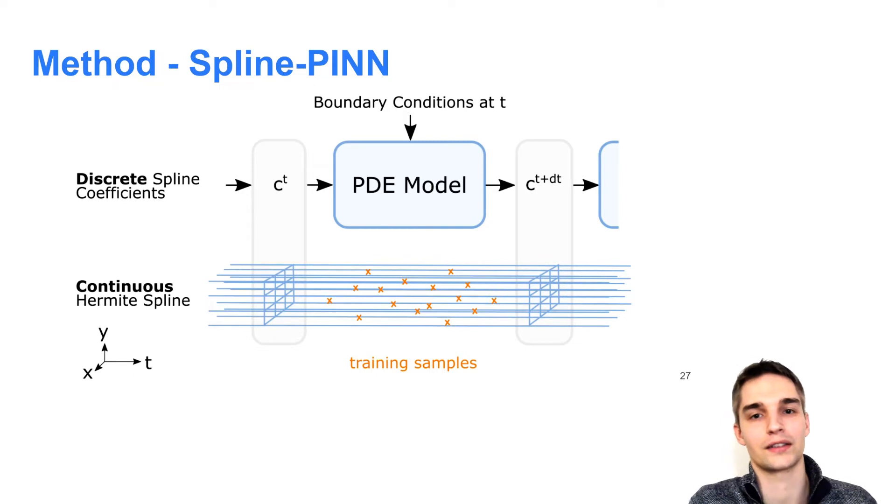For example, for the Navier-Stokes equation, we use the U-Net, while for the wave equation, a simple feedforward CNN was already sufficient. More details on that can be found in our supplementary material.